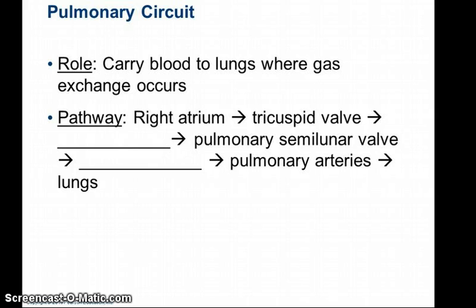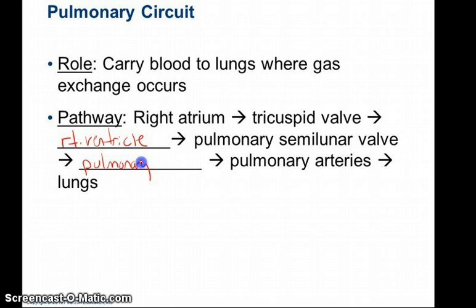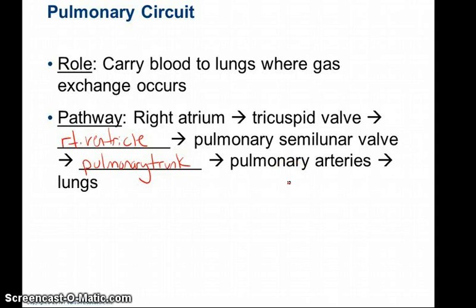The role of the pulmonary circuit is to carry blood to the lungs where gas exchange occurs. The pathway is: right atrium → tricuspid valve → right ventricle → pulmonary semilunar valve → pulmonary trunk → right and left pulmonary arteries → lungs. You should learn this pathway and be able to trace it without looking at a picture.